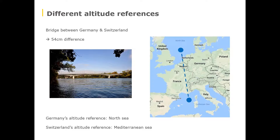First, an introduction to this little incident — it's an example of why it is important to know which altitude reference you are working in. This is not necessarily an example from the drone mapping world, but it displays very well how one can get in trouble if not aware of its altitude reference system. Here in Switzerland, at the border to Germany, a bridge was built between the two countries. During construction, about halfway through, they realized the bridge wouldn't join in the middle since both parts were at different levels. How could this happen?